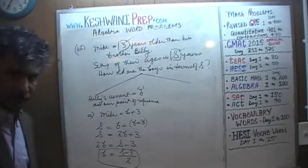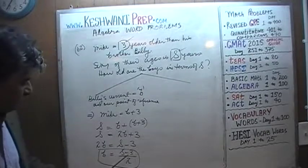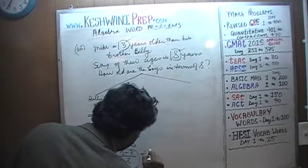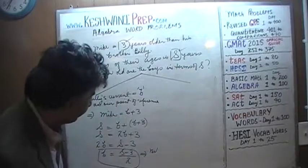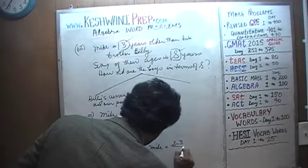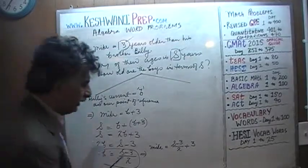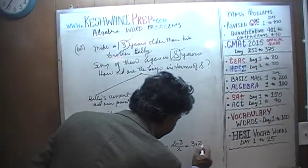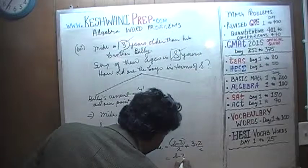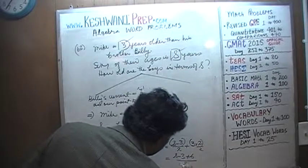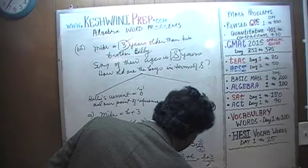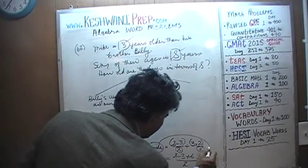Combining the b's, we get 2b plus three equals s. Subtract three from both sides: 2b equals s minus three, therefore b equals (s minus three) over two. That's Billy's age. Michael's age is going to be b plus three, which is (s minus three) over two plus three, which simplifies to (s plus three) over two. That's Michael's age.